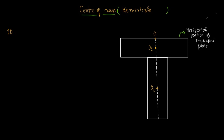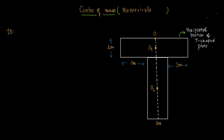The length of the horizontal portion of the T-shaped plate is 2 meters. The breadth of the horizontal portion is 3 meter plus 2 meter plus 3 meter, that is 8 meters. The vertical portion has a height of 6 meters and a width of 2 meters. M2 is the mass of the vertical portion and M1 is the mass of the horizontal portion.